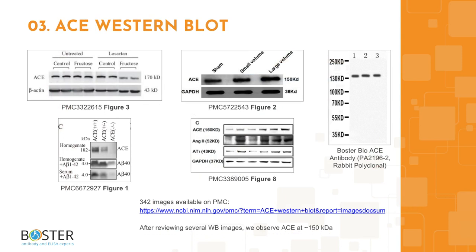Topic 3: ACE in western blotting. Antibody specificity can make or break an experiment. After looking through western blot images from publications and antibody companies, we can see that typically one band can be expected in an ACE western blot at about 150 kilodaltons. Check out the PMC link for more images, which is also provided in the description box.